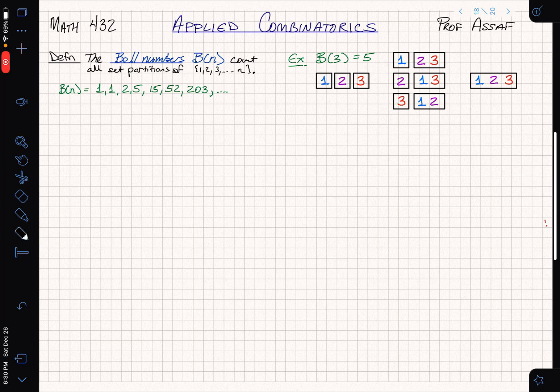The Bell numbers are going to grow slower than permutations, but not a lot slower. That tells us that if we want to study them, it's a good idea to use the exponential generating function instead of the ordinary one. Let's define the exponential generating function for the Bell numbers as B(x).